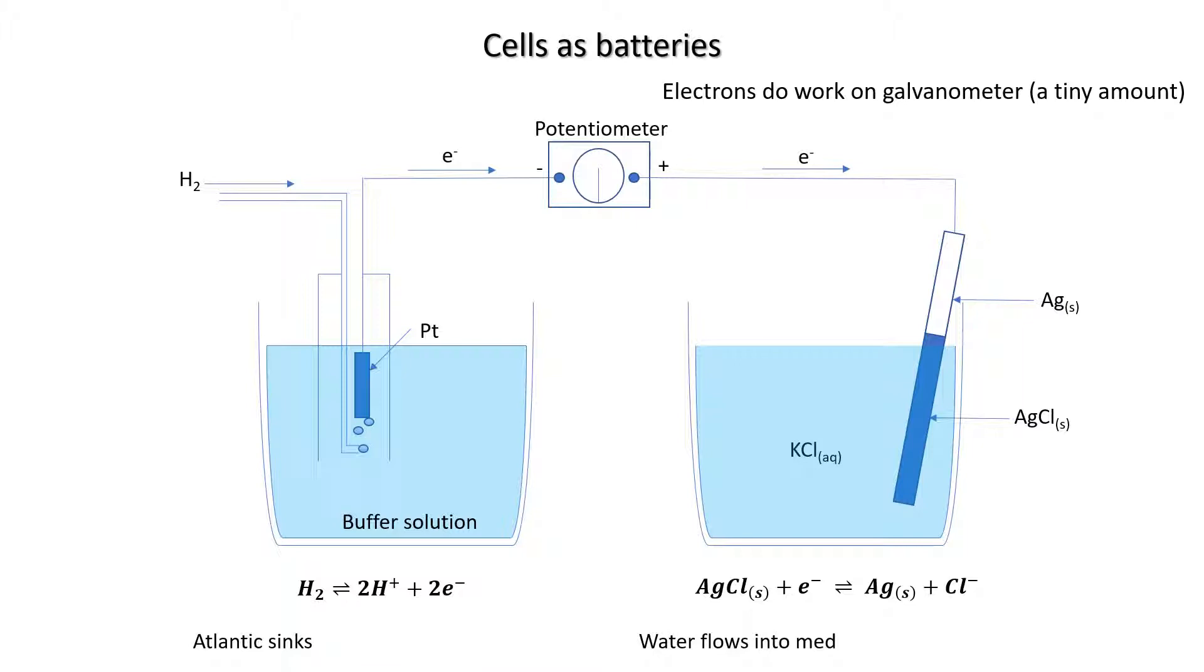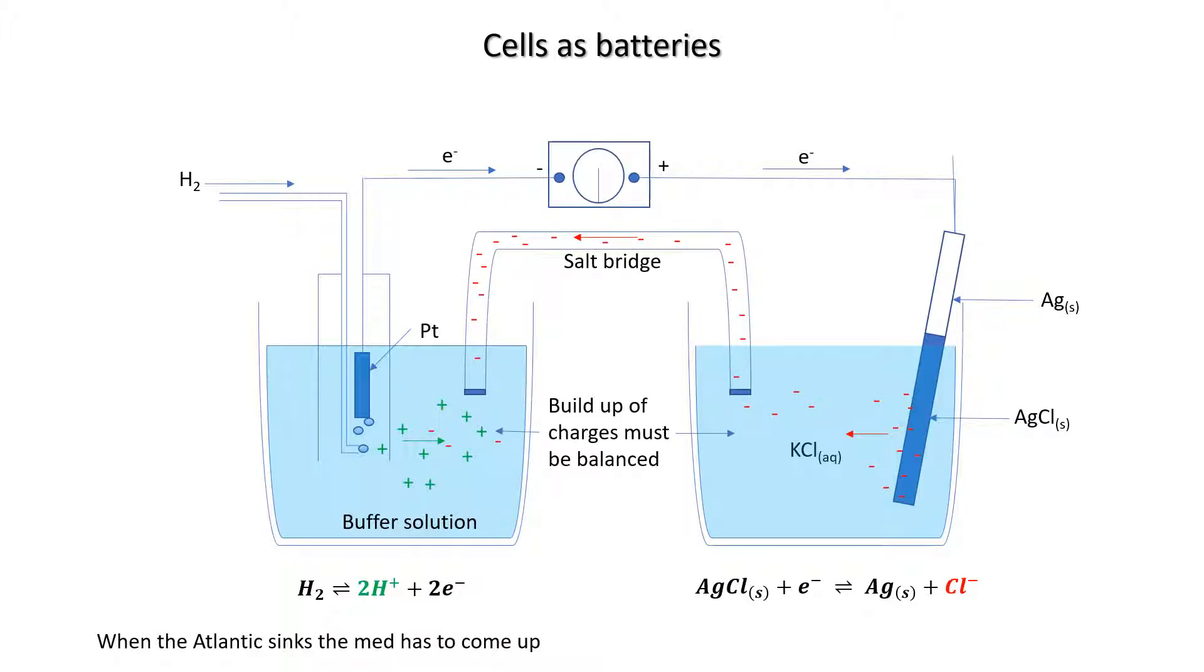As oxidation continues, protons will build up in the left-hand solution, and as reduction continues, chloride ions will build up in the right-hand solution. This buildup of charge has to be balanced, otherwise repulsion will stop the reactions from taking place. We do this by putting in a salt bridge which allows charge to flow from both the potassium chloride solution as chloride ions go through the salt bridge, and for positive ions to flow across the salt bridge into the potassium chloride solution.